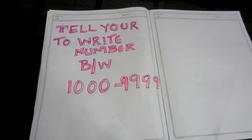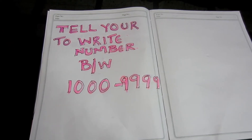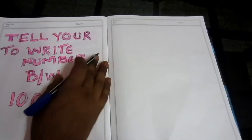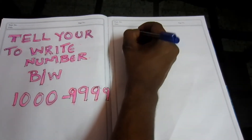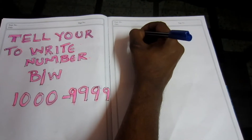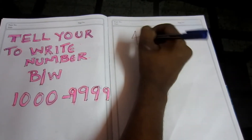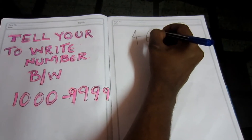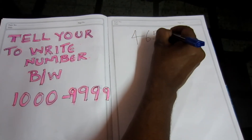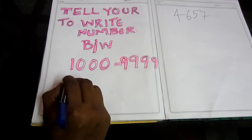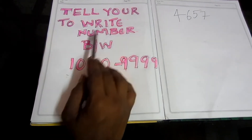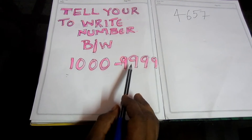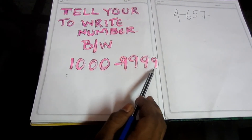First, we are going to do a friend game using a calculator. Start the game — you can find a number. If you have a friend, we are going to pick a number. Tell your friend to write a number between 1000 to 9999.